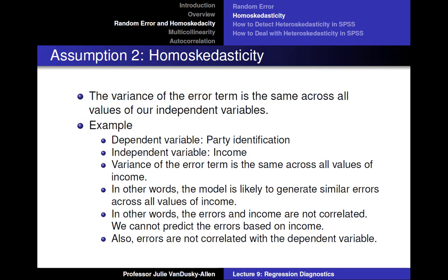Additionally, if the errors are not correlated with the independent variable income, that would mean they would also theoretically not be correlated with the dependent variable party identification. Since the model would consistently make estimates of the dependent variable party identification across all values of the independent variable income, the errors would also not be correlated with the dependent variable either.